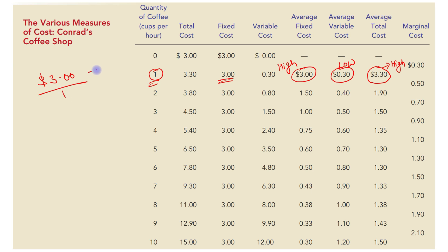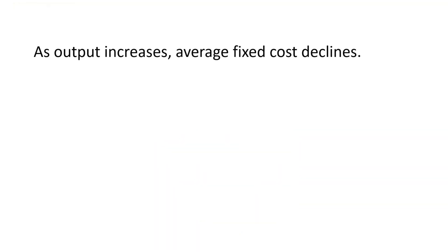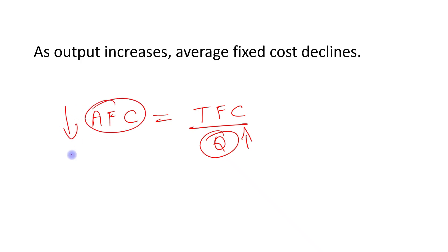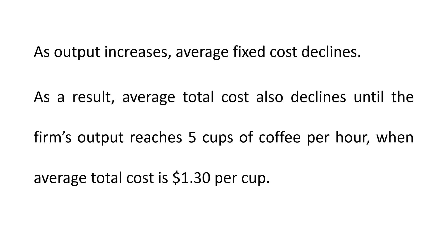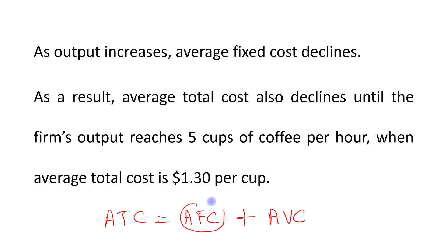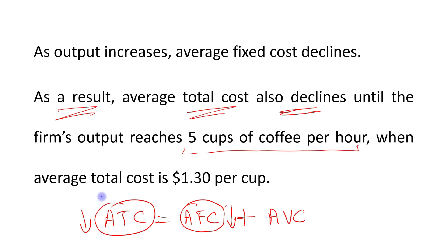As output increases, average fixed cost declines, and as a result average total cost also declines. When output level increases, AFC declines, and when AFC declines, ATC will also decline as a result — until the firm's output reaches 5 cups of coffee per hour.